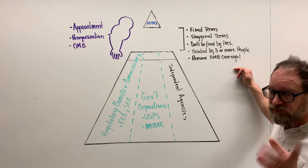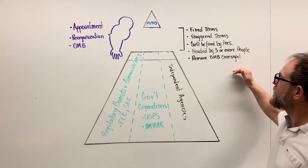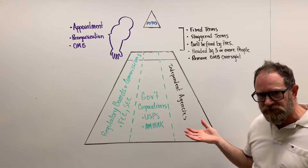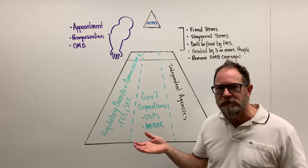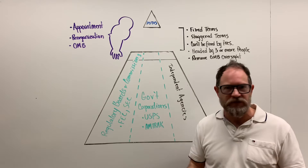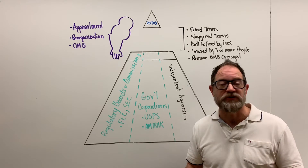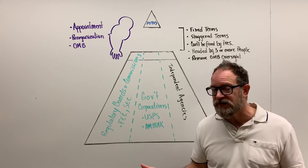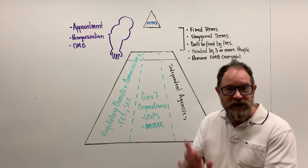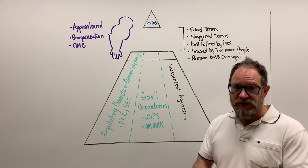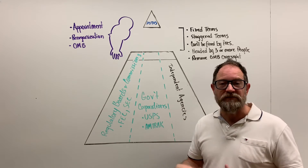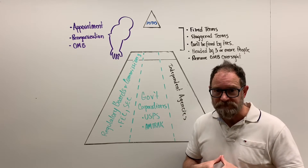The final feature is that the budget oversight of these entities on this side of the pyramid is removed from the Office of Management and Budget's control. Who oversees their budget then? Probably Congress in that particular case, directly - rather than having the intermediary of an entity that works for the president through the Executive Office of the President.